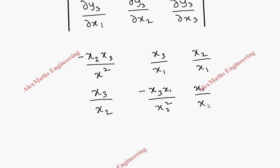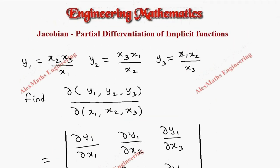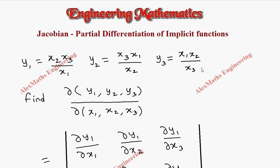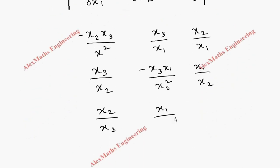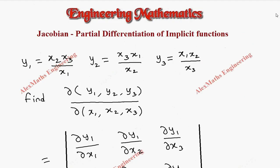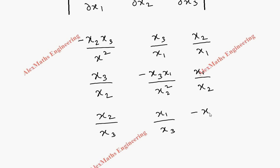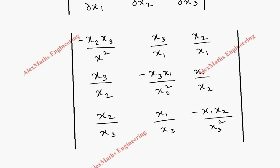For y3 with respect to x1: x2/x3 is constant, so we get x2/x3. With respect to x2: x1/x3 is constant, so we get x1/x3. With respect to x3: differentiating 1/x3 gives −1/x3², and the numerator stays, so we get −x1*x2/x3². Now we have all the entries and need to evaluate the determinant.